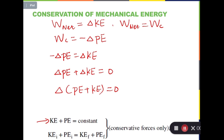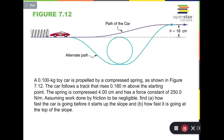Keep in mind that this is only true when we have only conservative forces in the system. Now let's use conservation of mechanical energy to solve a problem. Here is a 0.100 kg toy car propelled by a compressed spring. The car follows a track that rises 0.180 meters above the starting point. The spring is compressed 4.00 centimeters and has a force constant of 250.0 N/m. Assuming work done by friction is negligible, find: A) how fast the car is going before it starts up the slope, and B) how fast it is going at the top of the slope.